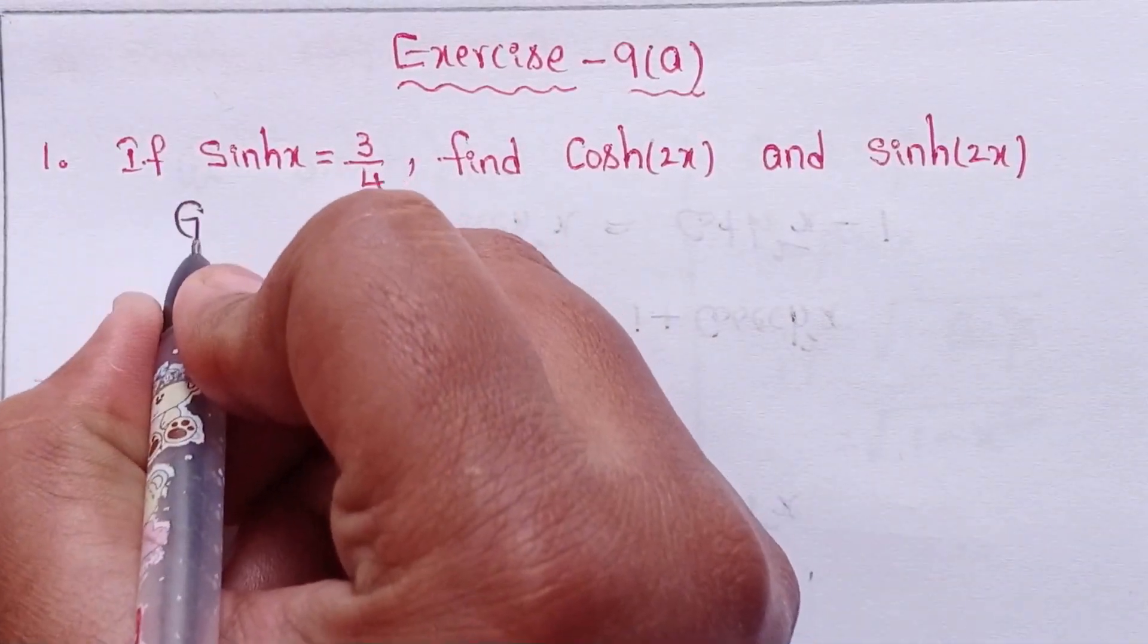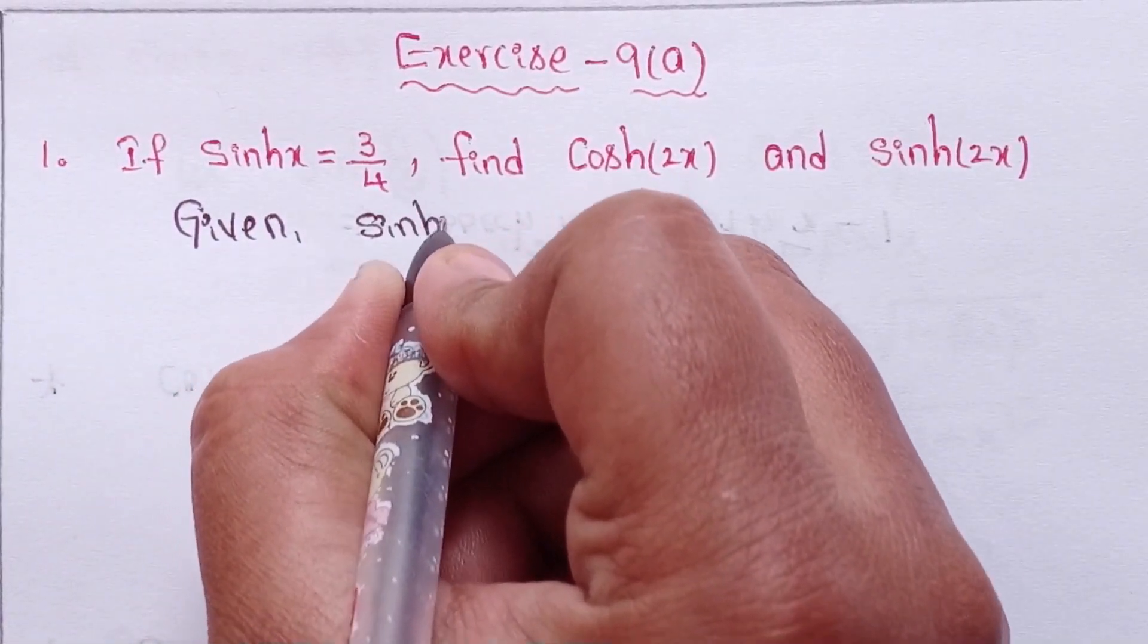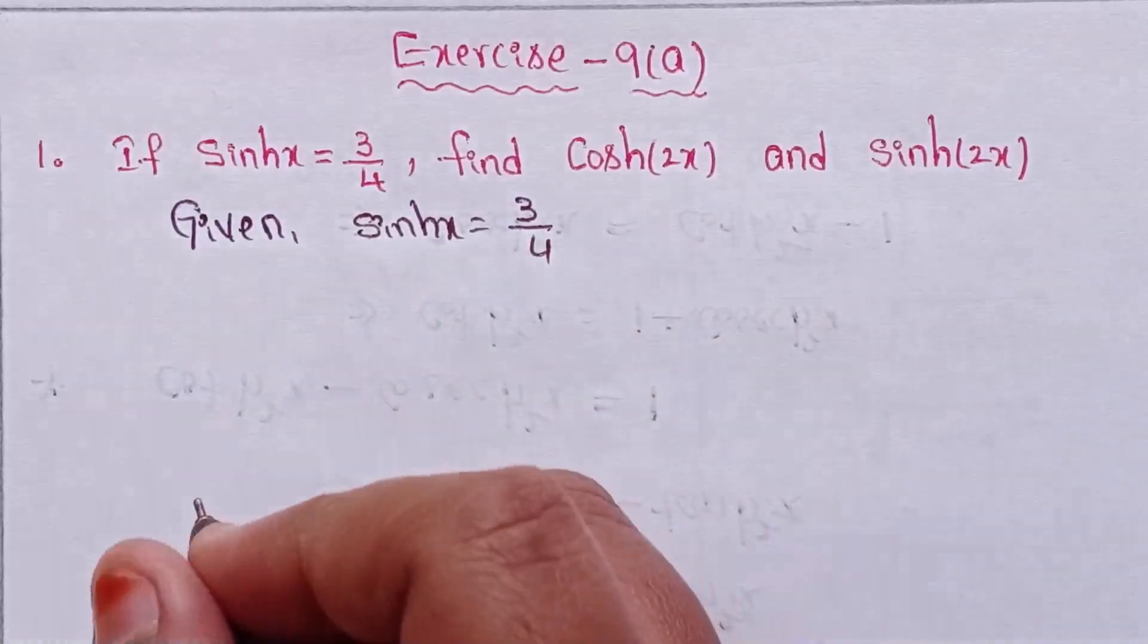First of all, you can write what is given. Given: sinh x equals 3 by 4.